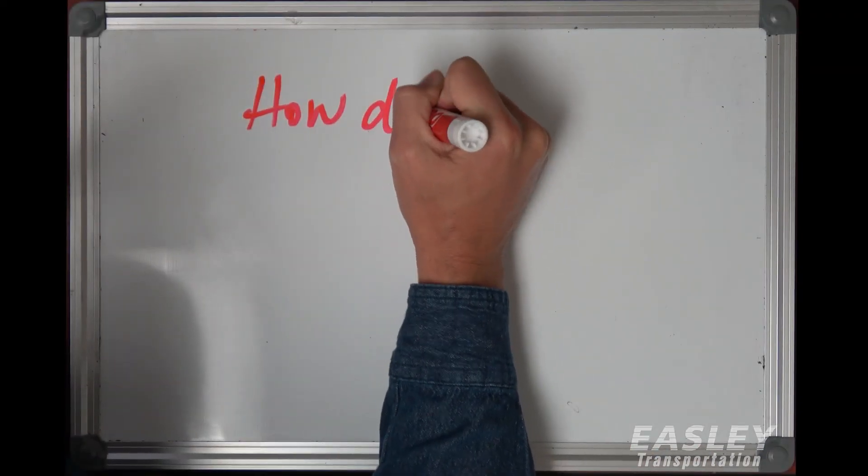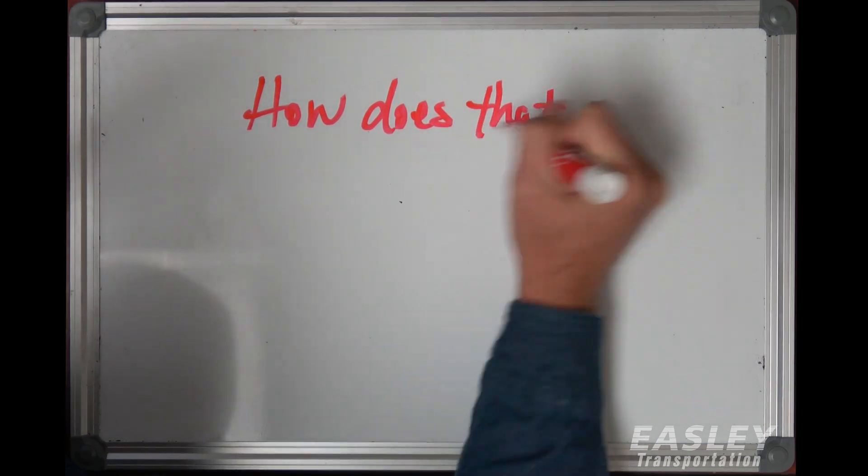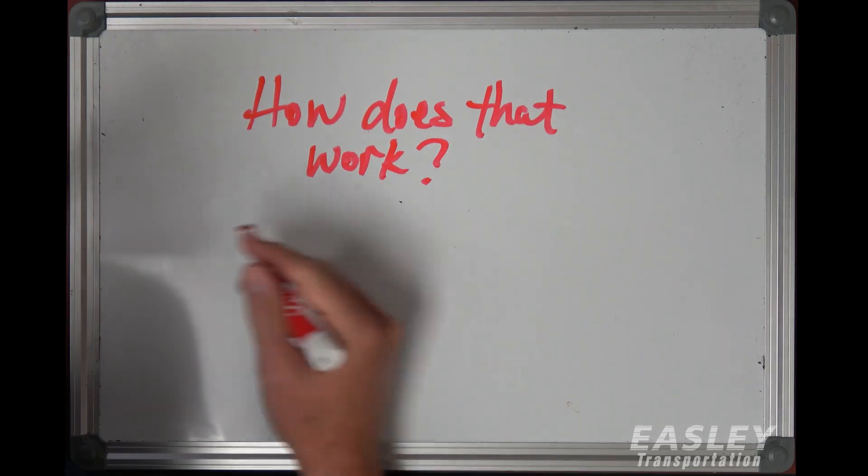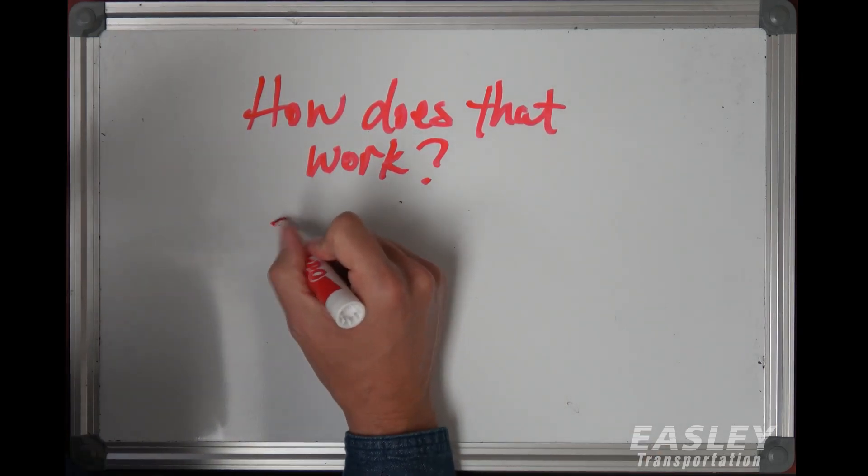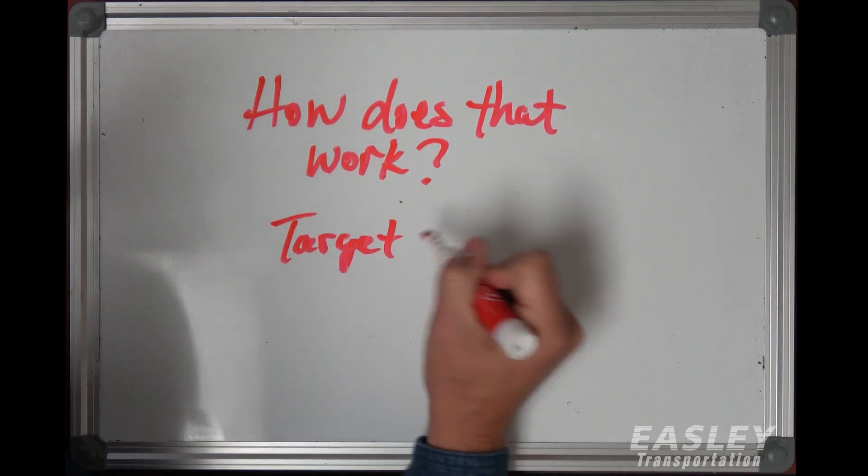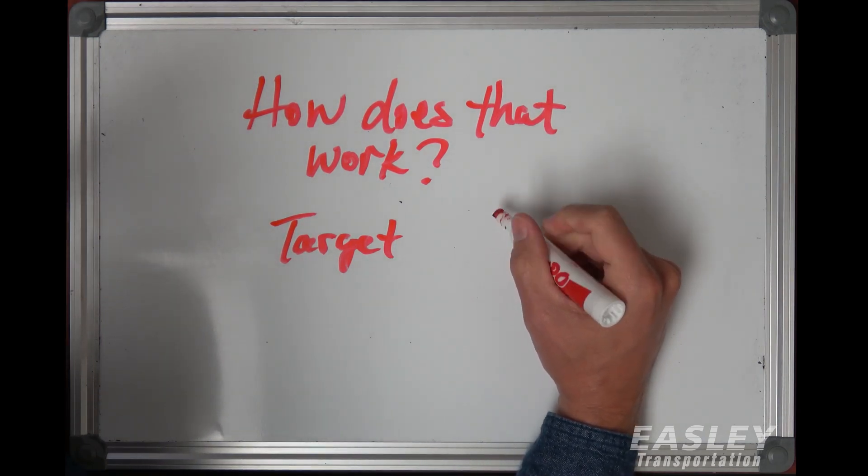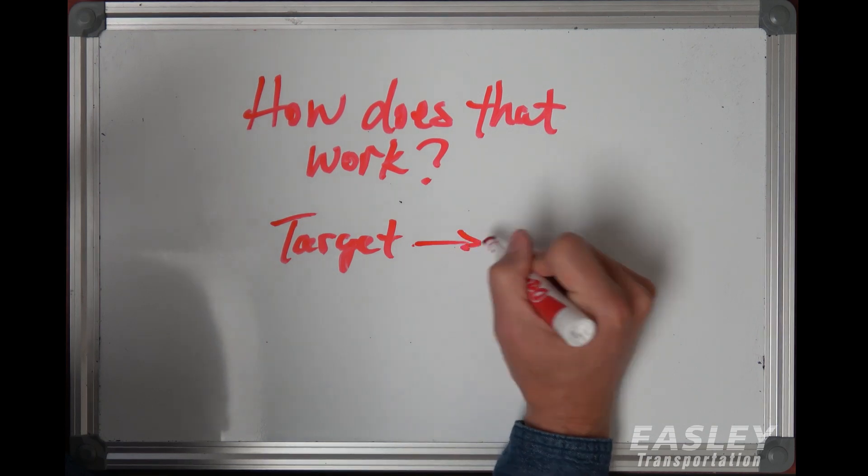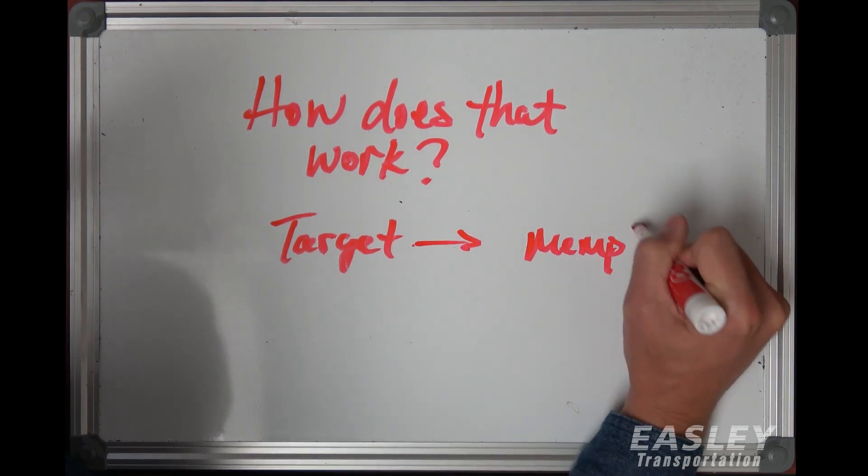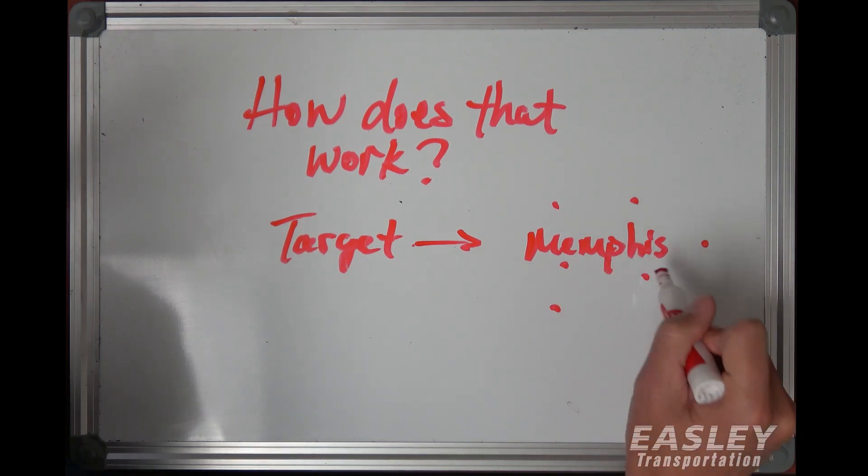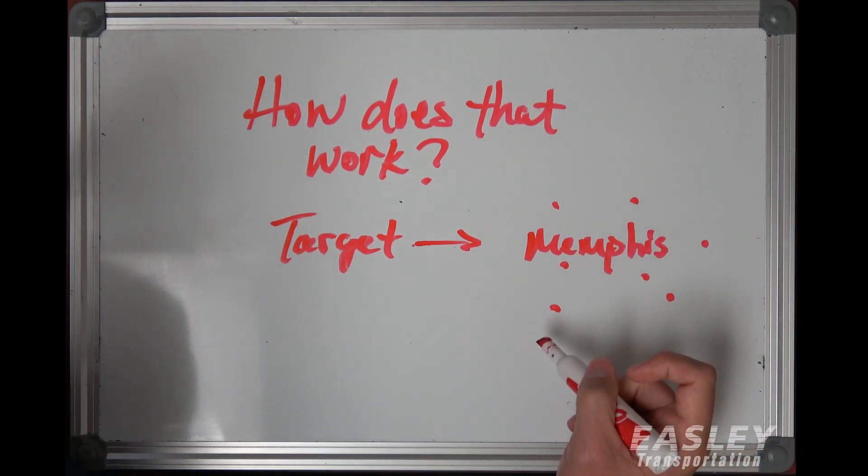So then you think, how does that work? Let's go back to one of our bricks-and-mortar retailers. Let's take Target for instance. We've got a Target store sitting over here. You've got probably multiple stores. Let's take the Memphis area. Target has multiple stores in the Memphis metro area - they've got some in the city, some in the suburbs, maybe five, six, seven, eight stores.